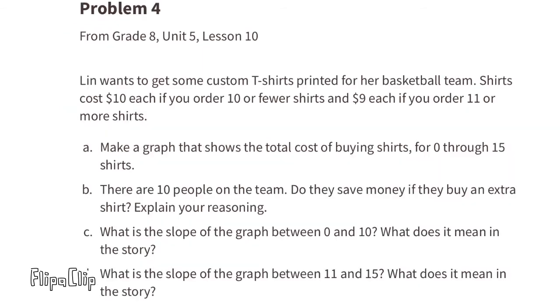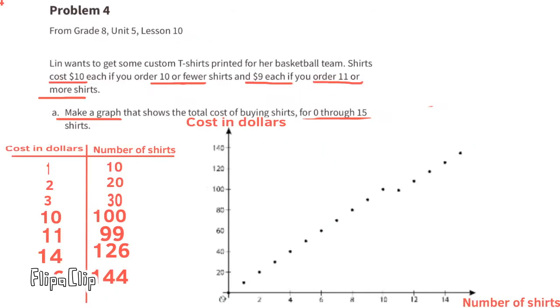Problem number 4. From 8th grade Unit 5 Lesson 10. Lynn wants to get some custom t-shirts printed for her basketball team. Shirts cost $10 each if you order 10 or fewer shirts. And $9 each if you order 11 or more shirts. A. Make a graph that shows the total cost of buying shirts. For 0 through 15 shirts. On the right side you see I have a graph.